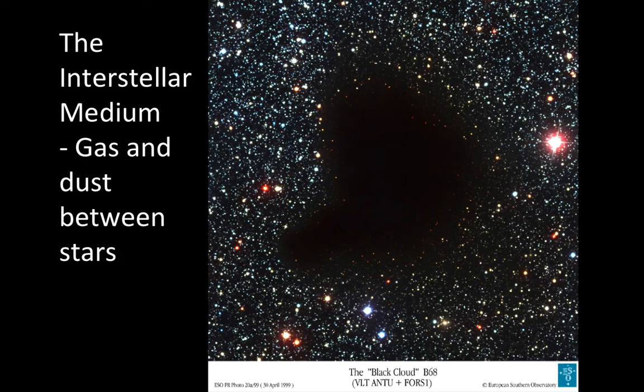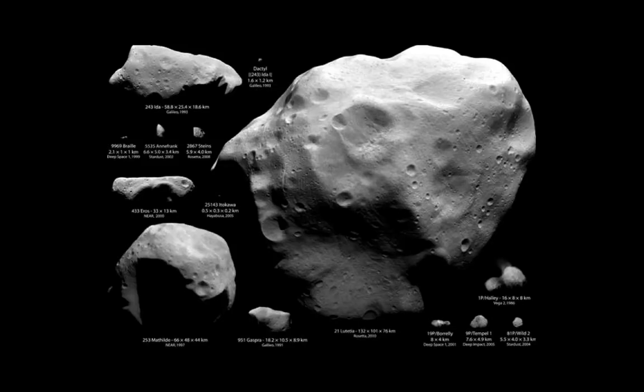They glom together into pebbles and boulders in the environment around young stars. Eventually they make larger objects, asteroids and comets, which have funny lumpy shapes like potatoes because they don't have enough gravity to collapse into a compact circular shape during formation.